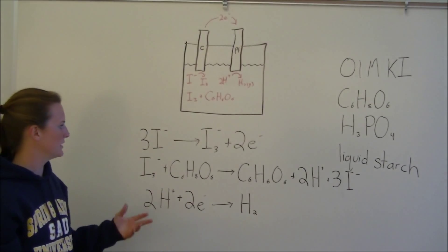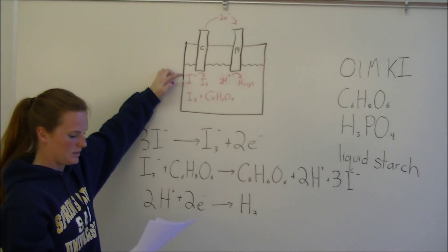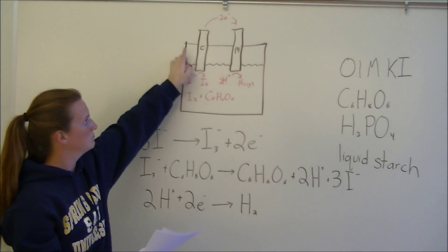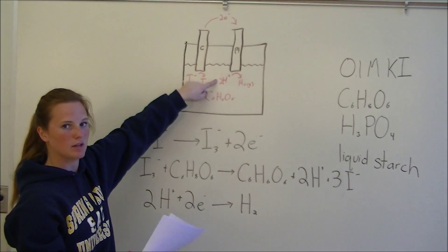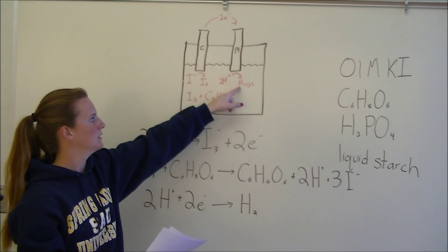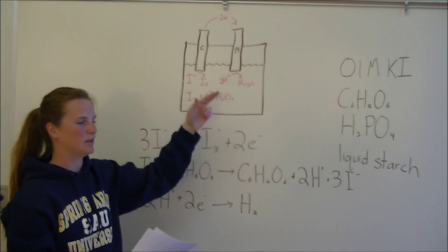So this completes the circuit. Basically, just to recap, iodide is being oxidized to iodine. Then to complete the circuit, protons from the phosphoric acid are being reduced to hydrogen gas, and this iodine is going to react with the ascorbic acid.